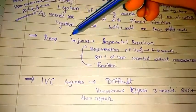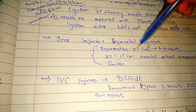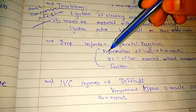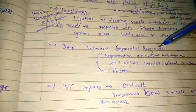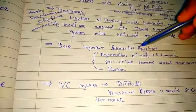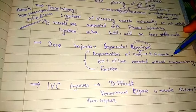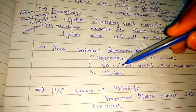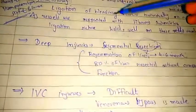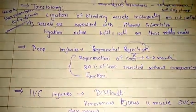For deep injuries, segmental resection can be performed. After segmental resection, liver regeneration occurs over 4 to 6 months. Up to 80% of the liver can be resected without compromising hepatic function.